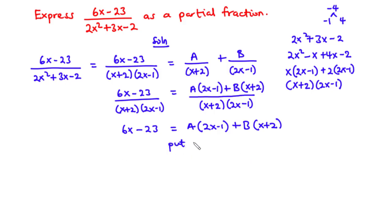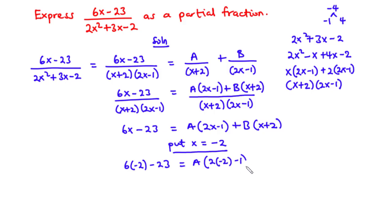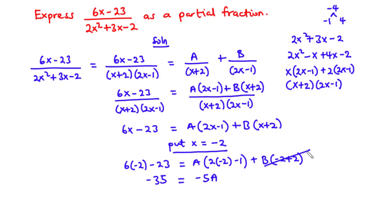To find A and B, we put x equals negative 2 so that B goes away. Substituting: 6 times negative 2 minus 23 equals A times 2 times negative 2 minus 1 plus B times negative 2 plus 2. That gives negative 12 minus 23, which is negative 35, equals negative 5A. Dividing through by negative 5, we have A equal to 7.